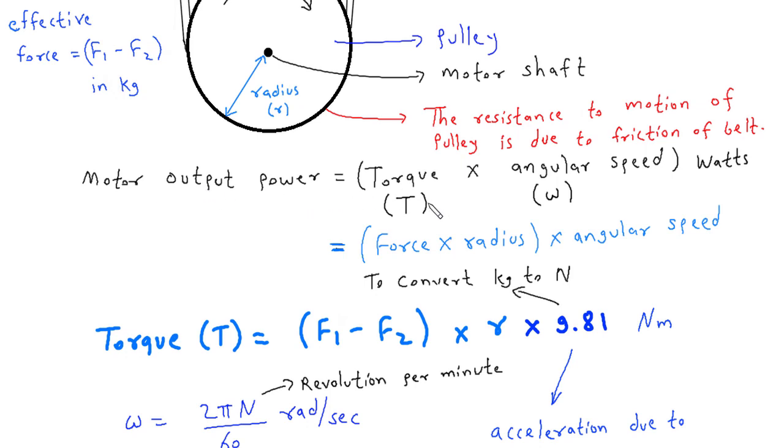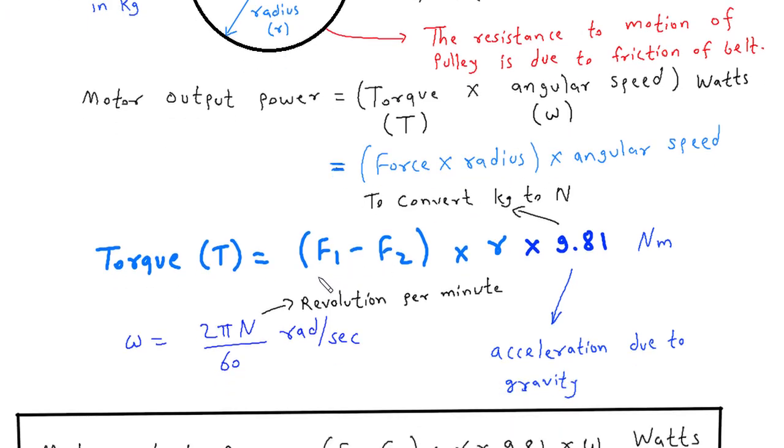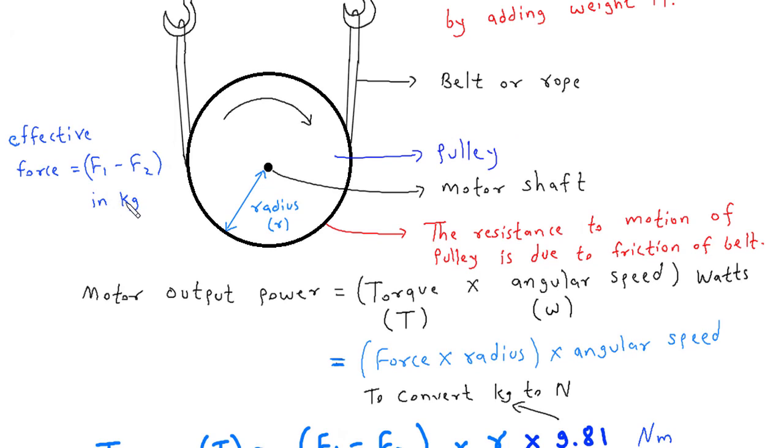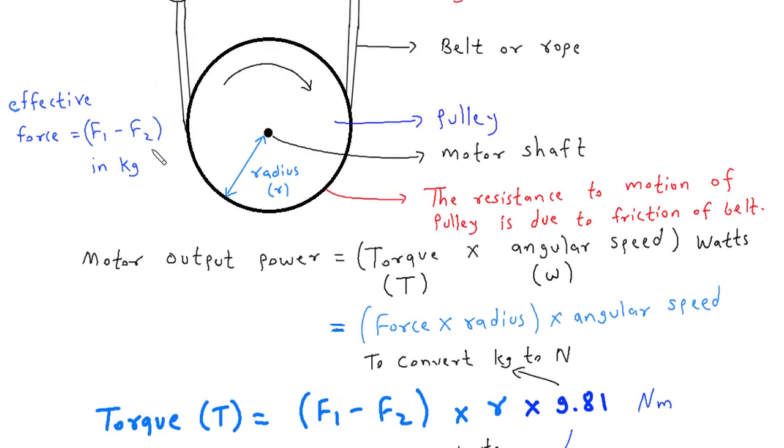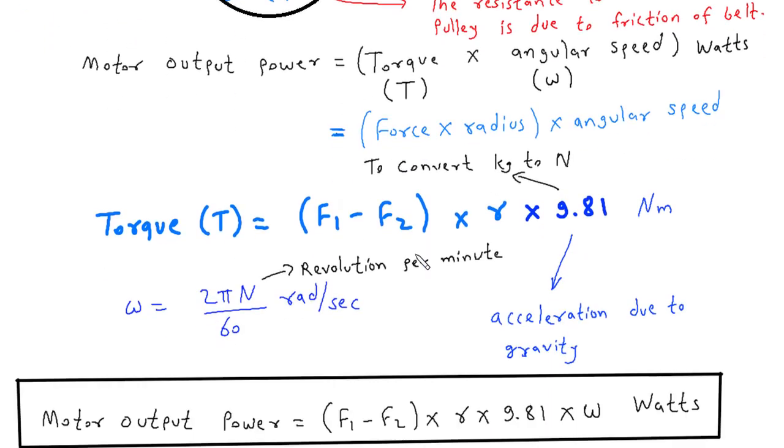Motor output power is equal to torque into angular speed. Torque is denoted by T and angular speed is denoted by ω. We know the formula for torque is force into radius. Here we can see torque is equal to (F1-F2), this is the effective force, into radius R, into 9.81. This 9.81 is acceleration due to gravity. We have multiplied with 9.81 to convert kilogram into Newton. The effective force is in kilogram, so we need to convert it into Newton meter.